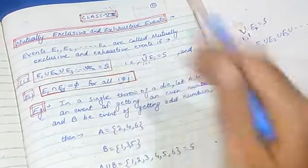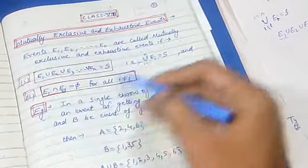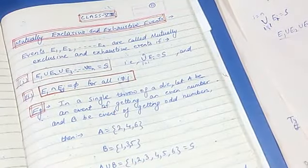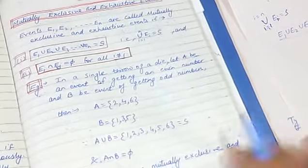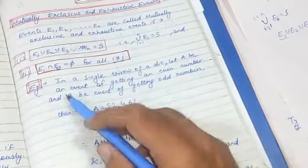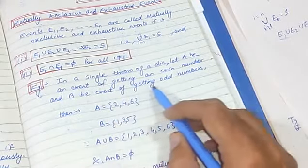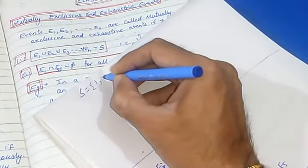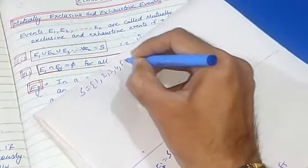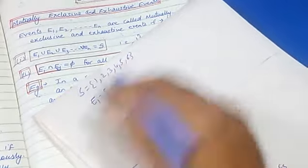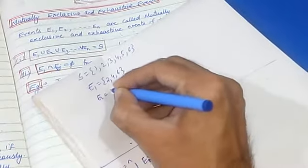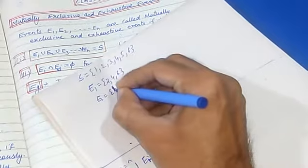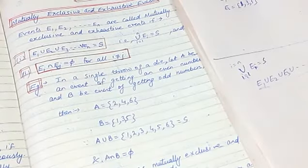So both conditions are satisfied: the exhaustive event condition and the mutually exclusive event condition. That is what we call mutually exclusive and exhaustive events. Now let's see an example. In a single throw of a die, let A be the event of getting an even number and B be the event of getting an odd number. The sample space is {1, 2, 3, 4, 5, 6}.